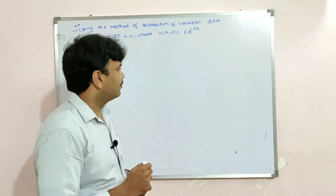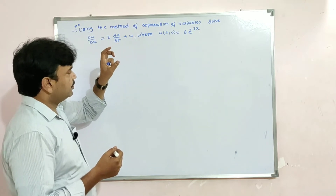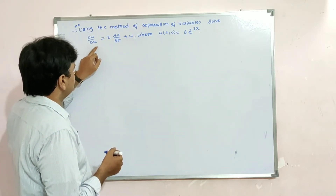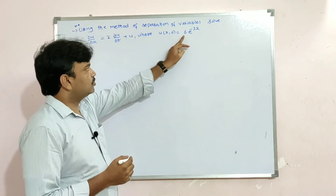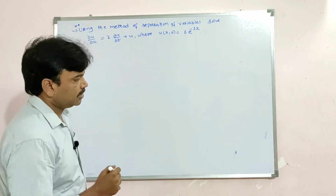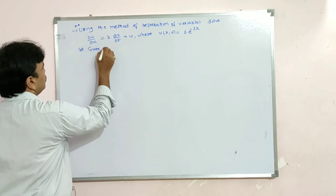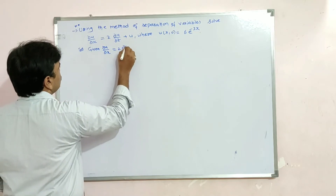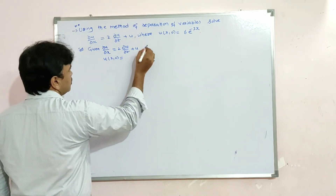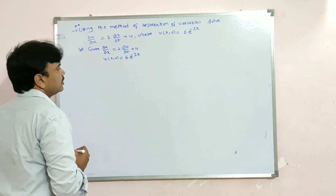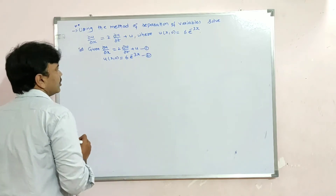Now let us see a problem on the method of separation of variables. Using the method of separation of variables, solve: ∂u/∂x = 2·(∂u/∂t) + u, given that u(x, 0) = 6e^(−3x).